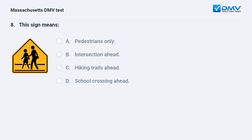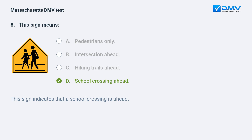This sign means: a. pedestrians only. b. intersection ahead. c. hiking trails ahead. d. school crossing ahead. Answer: d. school crossing ahead. This sign indicates that a school crossing is ahead.